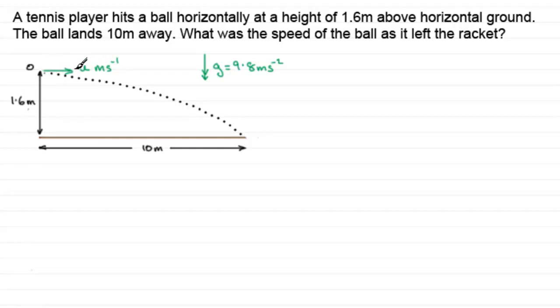But in questions like this, the initial vertical component is zero because it's just acting horizontally. It's not inclined at an angle to the horizontal.